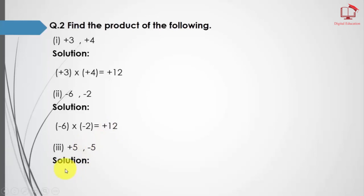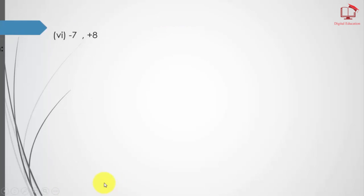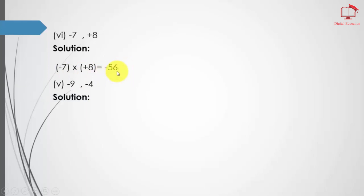The third one: 5 multiplied by 5 equals 25. Here we have 5 and 5; the answer is 25, and plus times minus equals minus. Again, 7 times 8 equals 56, and plus times minus equals minus, so the right answer is minus 56. Then 9 times 4 equals 36, and minus times minus equals plus.